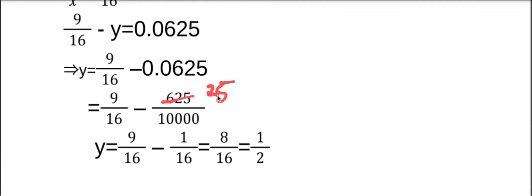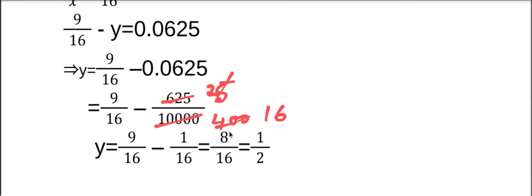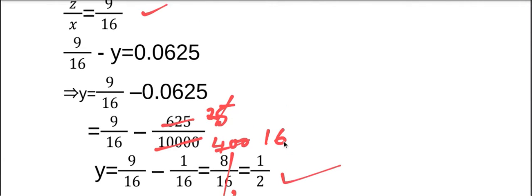25 into 25 is 625. Dividing 10000 by 25 gives 400, and dividing 400 by 25 gives 16. So y equals 9 by 16 minus 1 by 16. LCM is 16, so 9 minus 1 is 8, giving 8 by 16. Dividing by 8 gives 2, therefore y equals half.